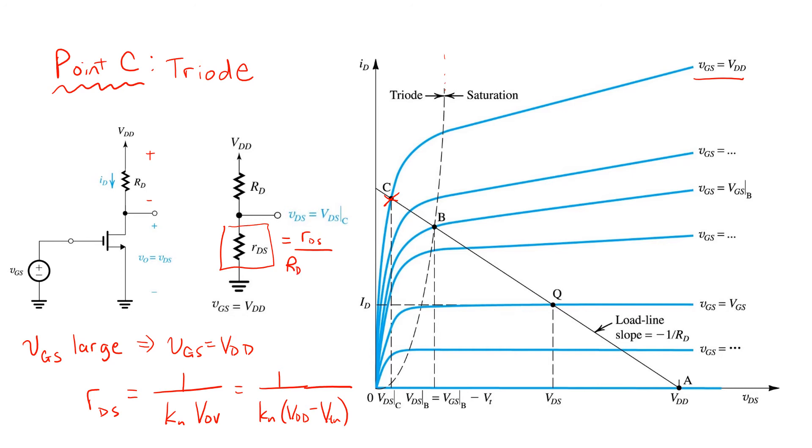It's a simple voltage division of VDD across the two series resistors, RD and the triode RDS. This is a bit of an approximation since this resistor model is accurate only when the transistor is deep in triode, but it's likely pretty accurate in this case with such a large gate source voltage applied.